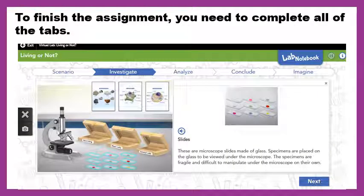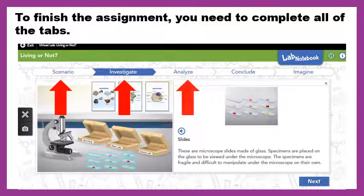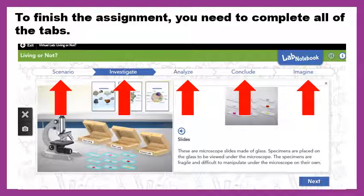To completely finish the assignment, you need to complete all of the tabs: Scenario, Investigate, Analyze, Conclude, and Imagine. Just be careful — if you're not completely done and you click Next, it might take you to the next tab even though you haven't finished all of the activities. If you can't move on in Pearson's, it's probably because you didn't click something.